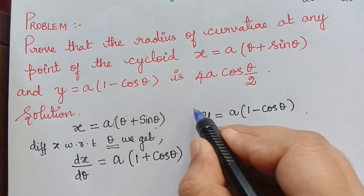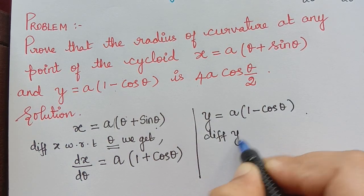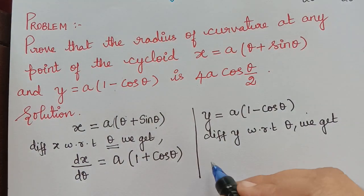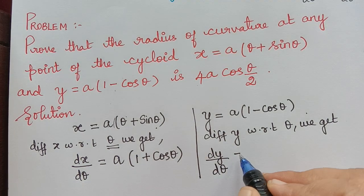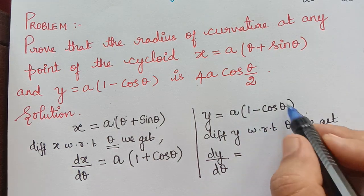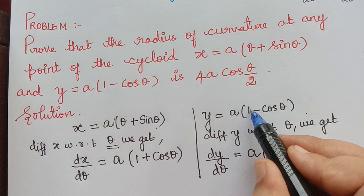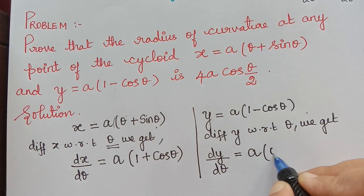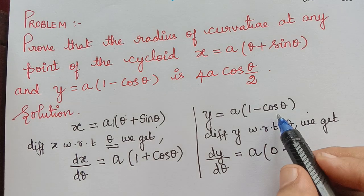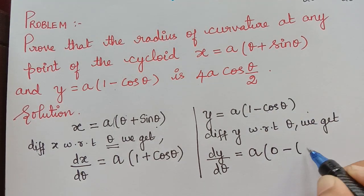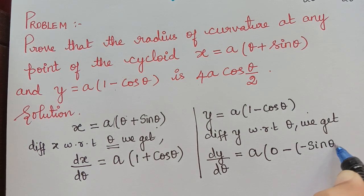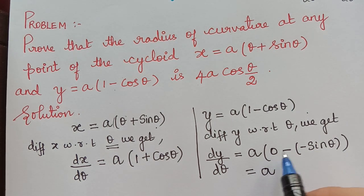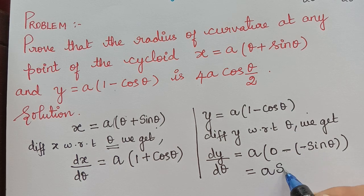Now differentiating y with respect to theta: dy/dθ equals a times (0 − sin θ). The derivative of 1 is 0, and the derivative of −cos θ is sin θ, so the negatives cancel and dy/dθ = a·sin θ.